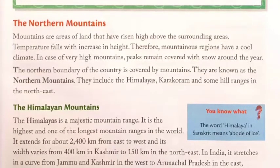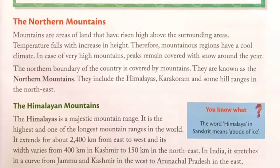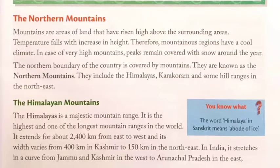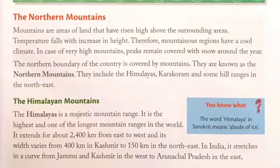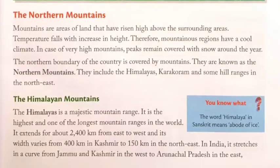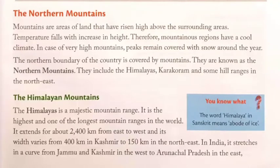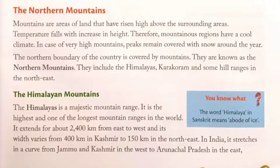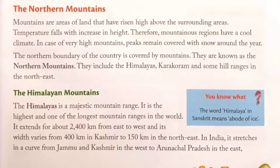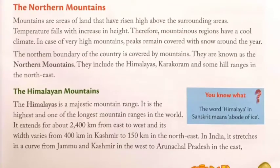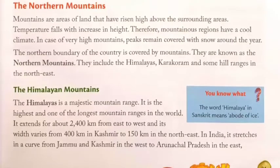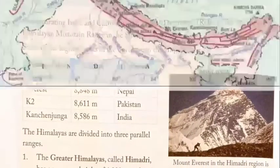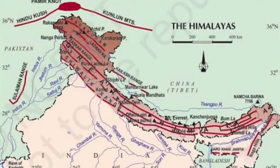The Himalayan Mountains — the Himalayas is a majestic mountain range. It is the highest and one of the longest mountain ranges in the world. It extends for about 2,400 km from east to west, and its width varies from 400 km in Kashmir to 150 km in the North East. In India, it stretches in a curve from Jammu and Kashmir in the west to Arunachal Pradesh in the east, thus separating India and China through a natural boundary.